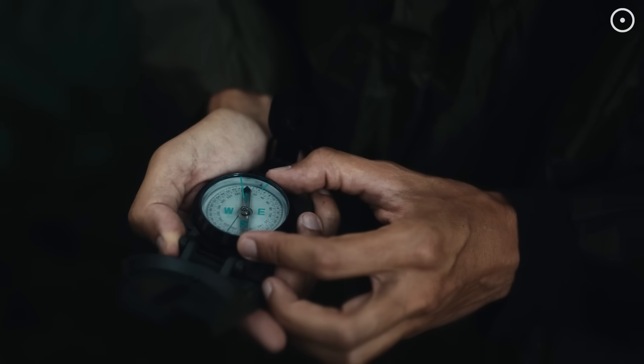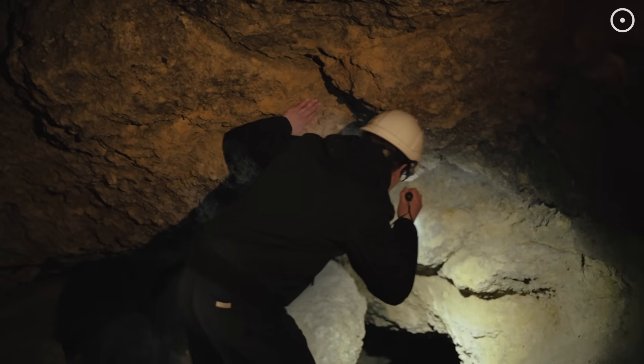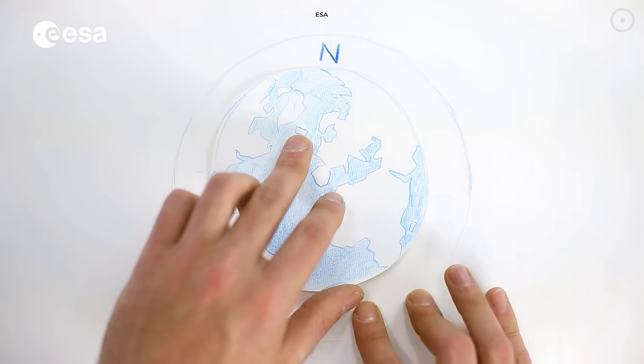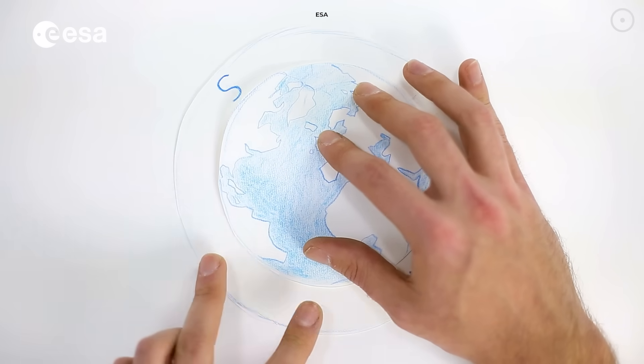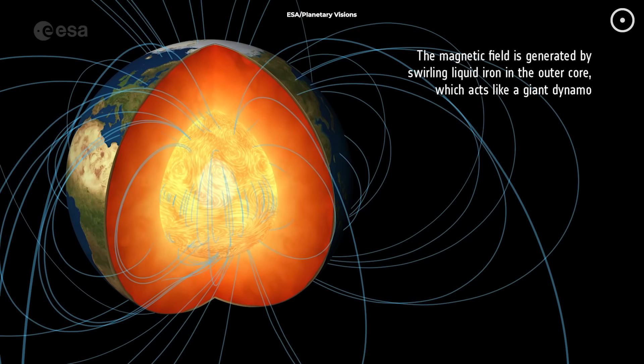Scientists have found evidence of this pattern before. By studying ancient rocks, they've discovered that Earth's magnetic field has flipped completely, with North becoming South and South becoming North hundreds of times in our planet's history. The last major reversal happened about 780,000 years ago. But how does a magnetic flip actually work?